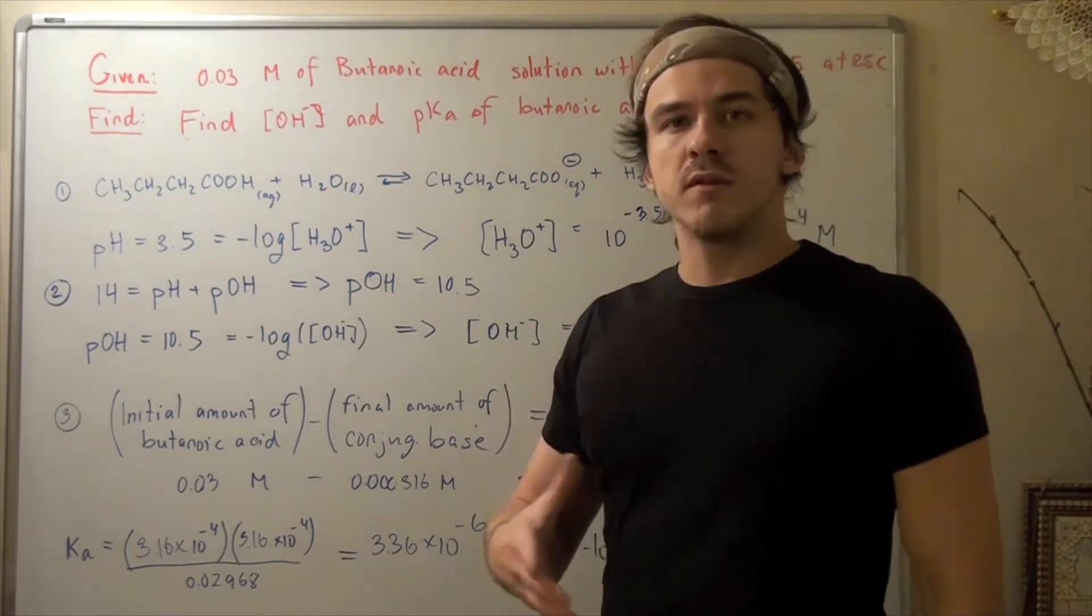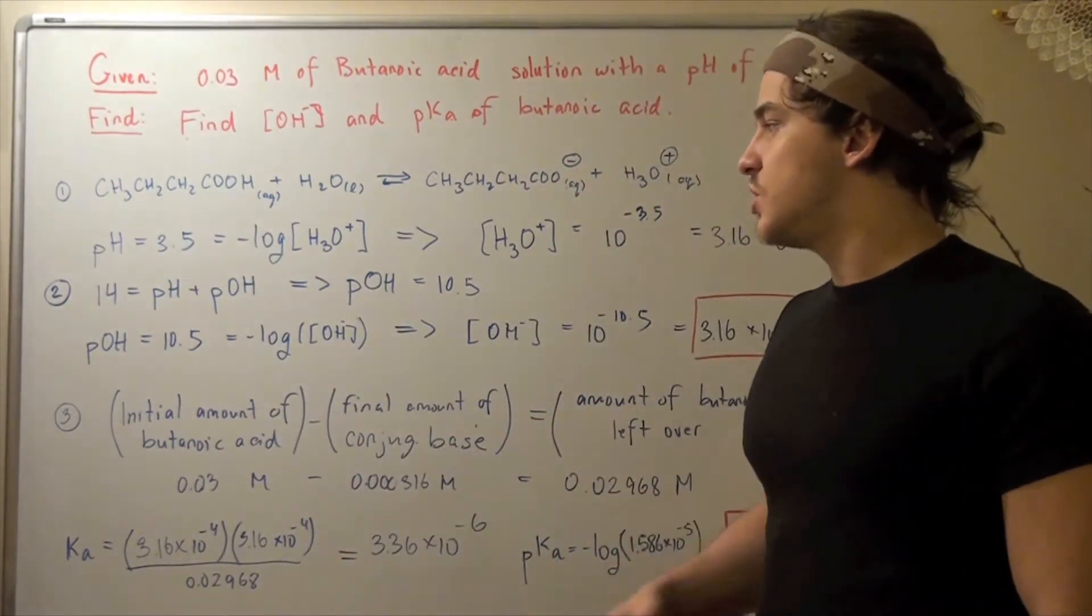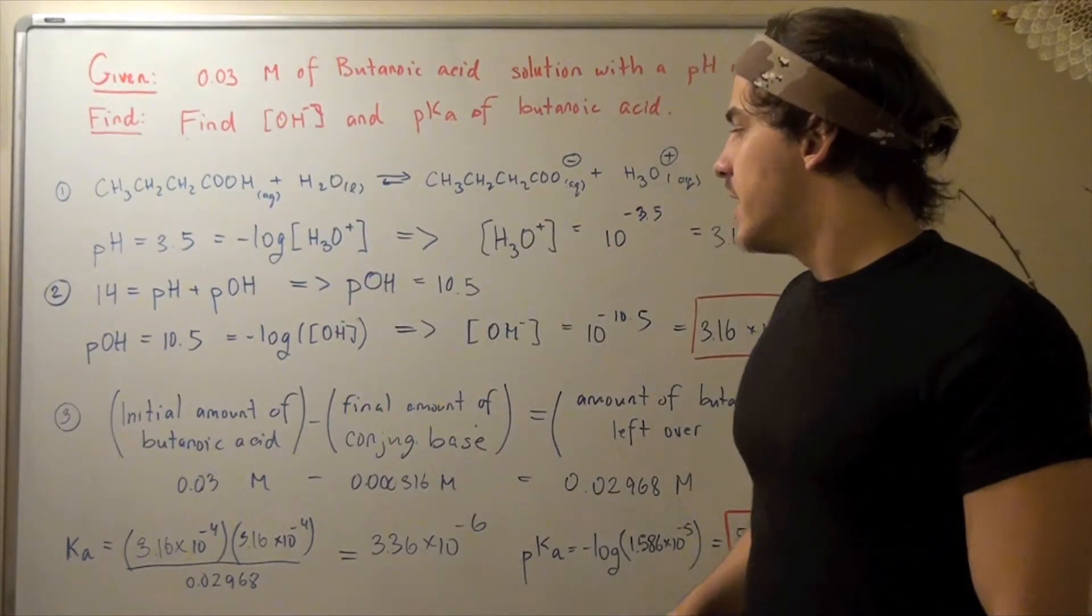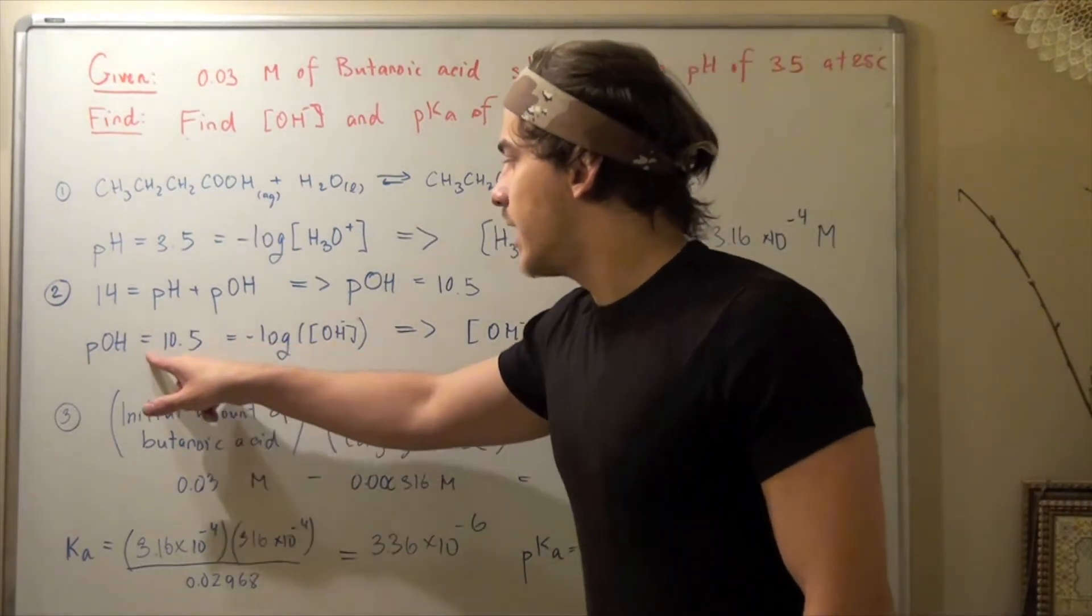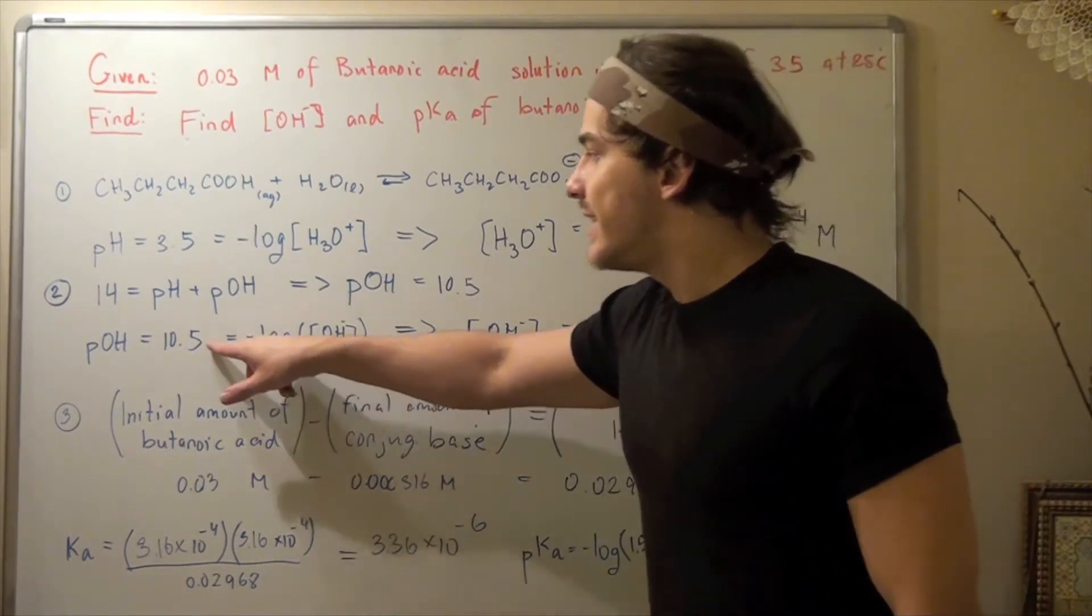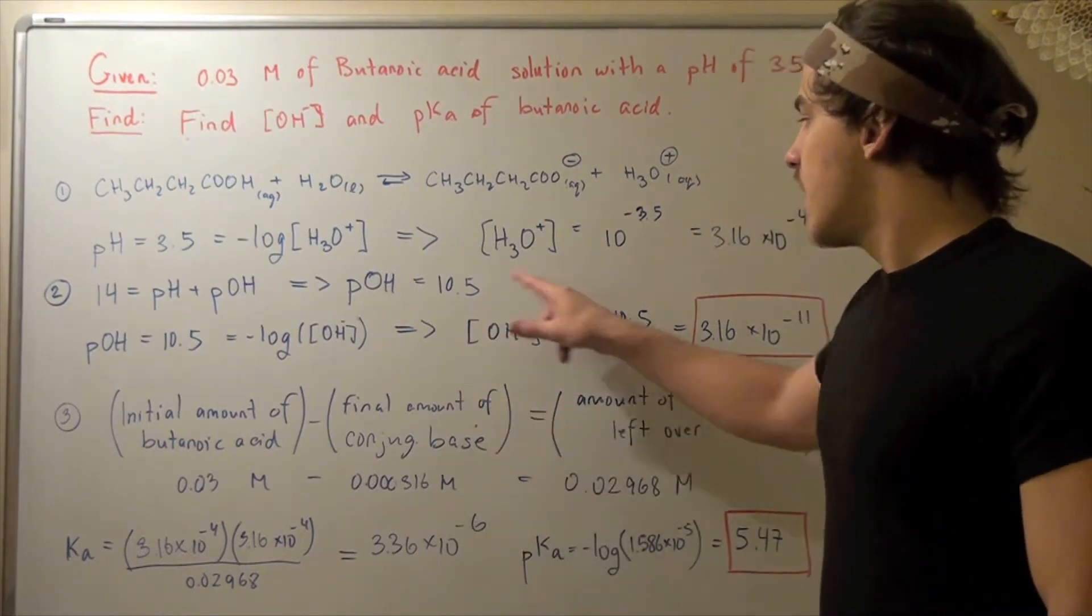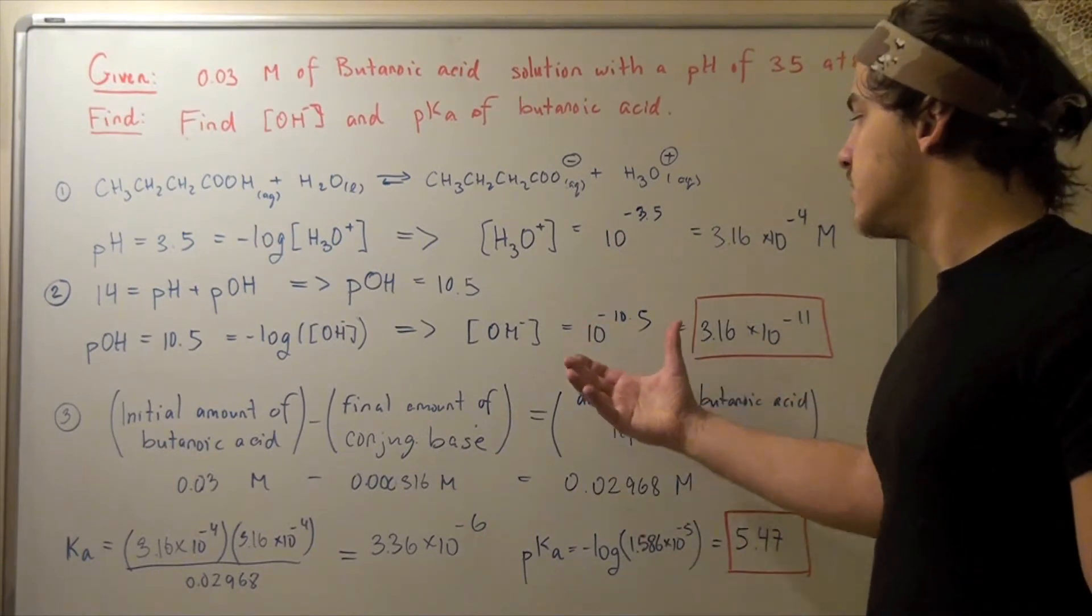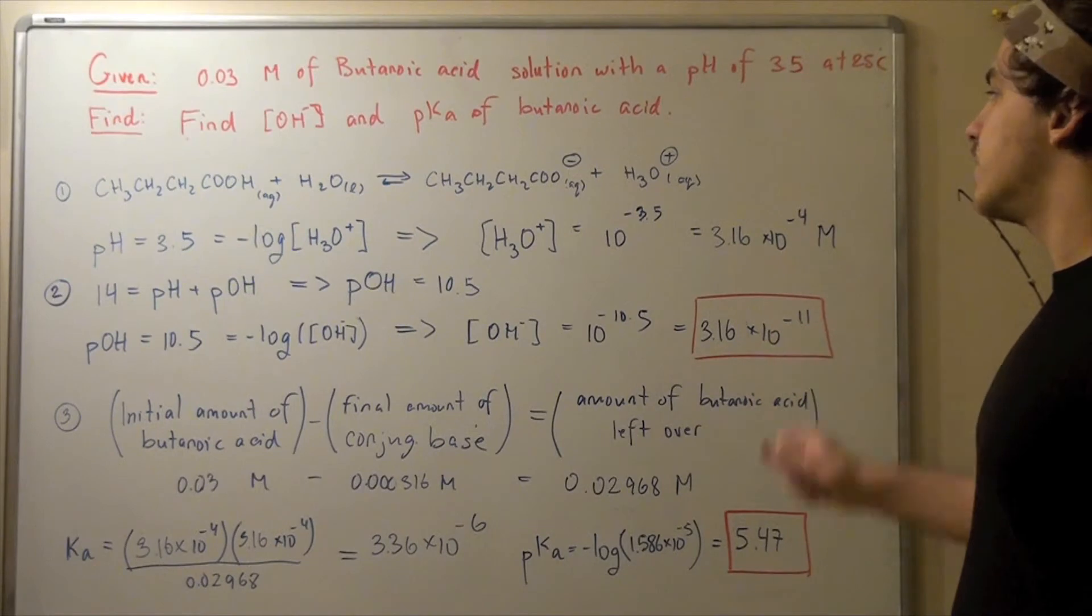And now I apply the formula for pOH. So pOH equals 10.5, which equals negative log of the concentration of OH-. Now I convert this log to exponent by first bringing the negative sign to this side. I see that my base is 10 and I raise that base 10 to the negative 10.5 exponent. So my concentration of hydroxide equals 10 to the negative 10.5, plug this into my calculator and get 3.16 times 10 to the negative 11 molar.